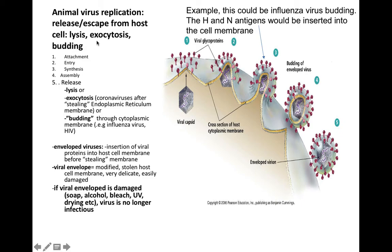In addition, naked and enveloped viruses can escape by exocytosis. That's how the coronavirus escapes — after stealing the endoplasmic reticulum as its envelope, coronaviruses are released through exocytosis. And then there's budding, which is a great way for enveloped viruses to acquire their envelope. Budding is how influenza viruses and HIV escape from our cells.